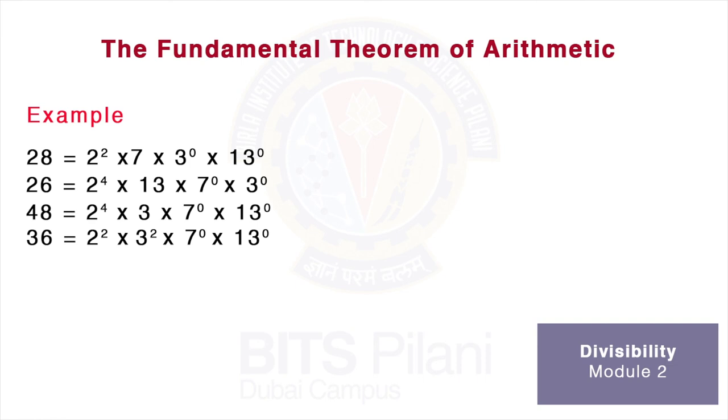The GCD of these 4 numbers is 2¹. We have taken the smallest power of 2. We multiply by 3 raised to the smallest power of 3 which is 0, 7 raised to 0, multiplied by 13 raised to 0. The GCD is 2.